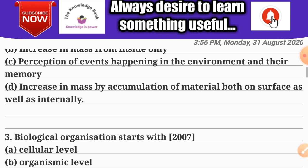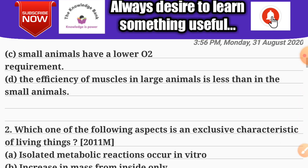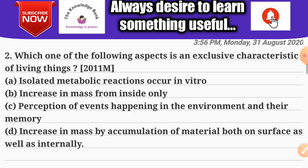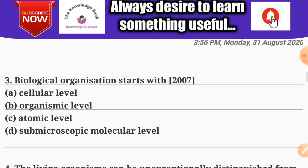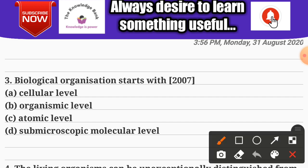Question one was asked in 2016 and 2011; question two was asked in 2012. Now, question number three: 'Biological organization starts with' — asked in 2007. Options: A) cellular level; B) organismic level; C) atomic level; D) sub-microscopic molecular level. The correct answer is D — sub-microscopic molecular level.